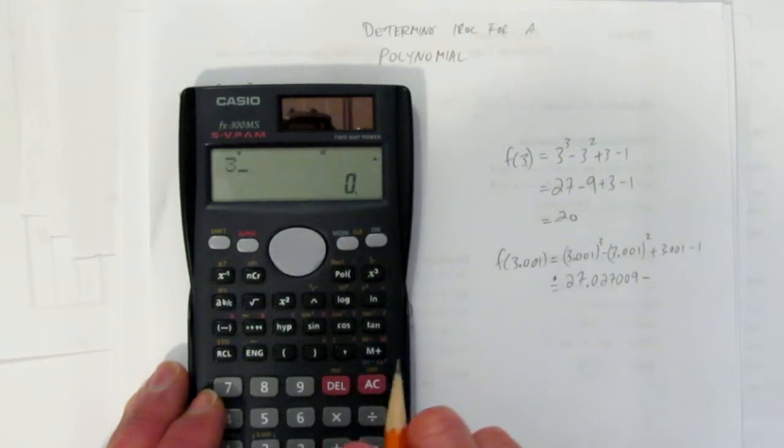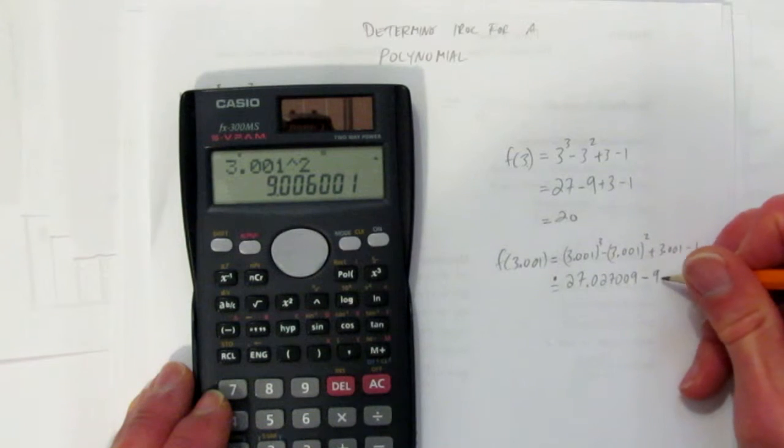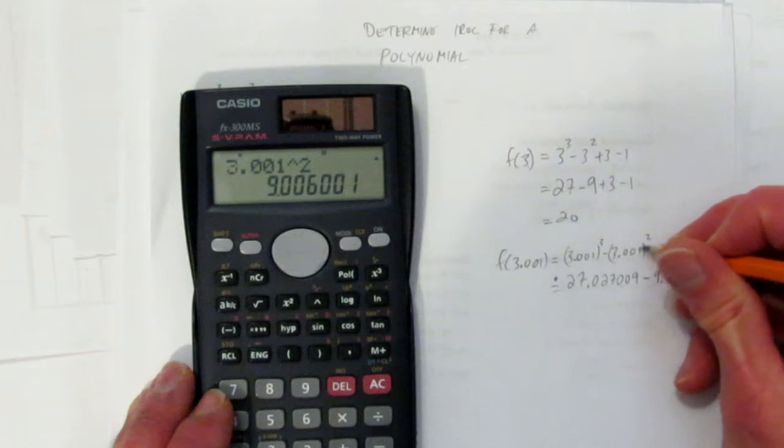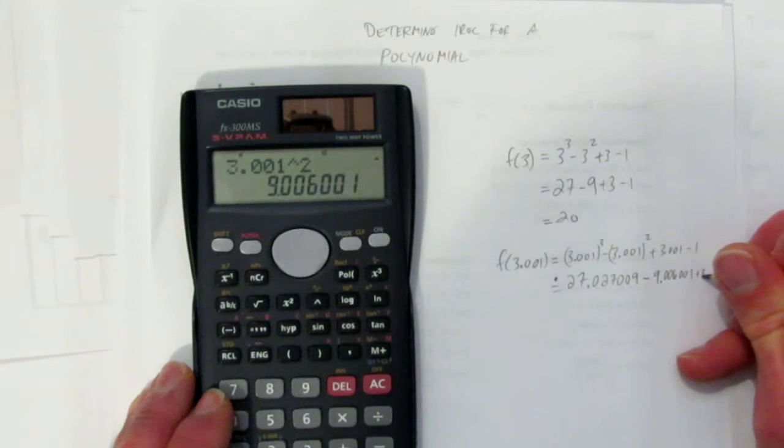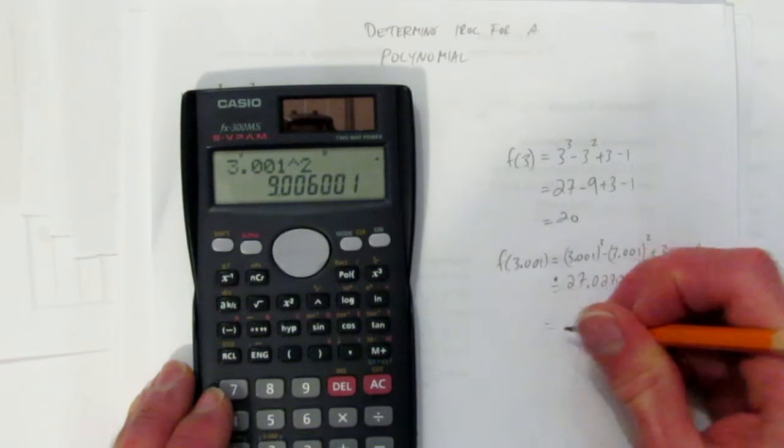Okay, 3.001 squared. Get 9.006001. That's for this number here. Plus 3.001 minus 1.